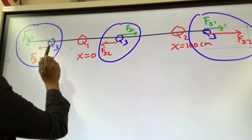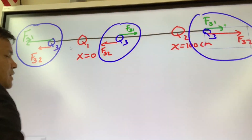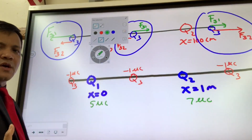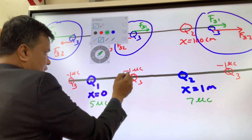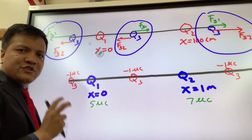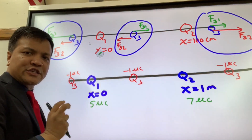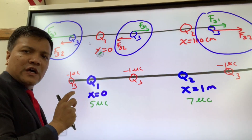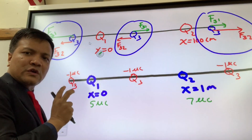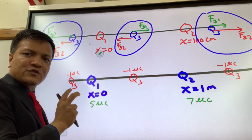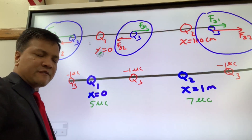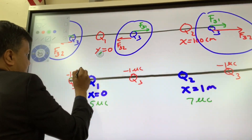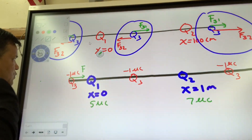Now, what if instead of q1 being positive, we make q1 negative? Let's see what happens. Our hypothesis is that this position would have zero net force acting on it, because the force vectors would be equal in magnitude and opposite in direction, so the net force will be zero.